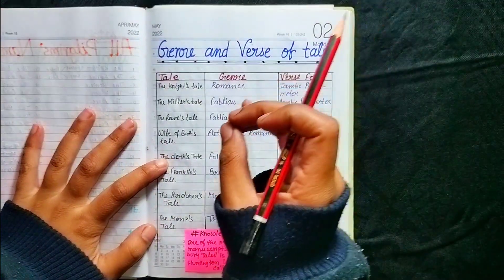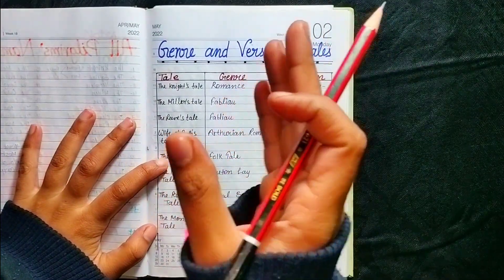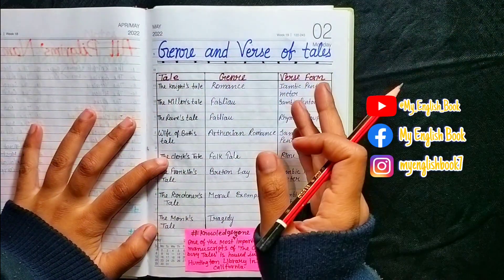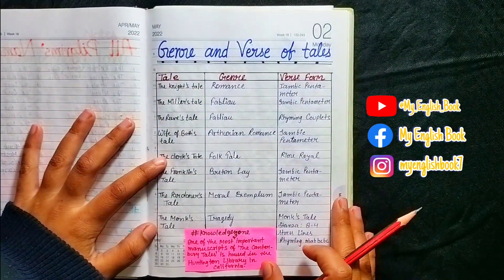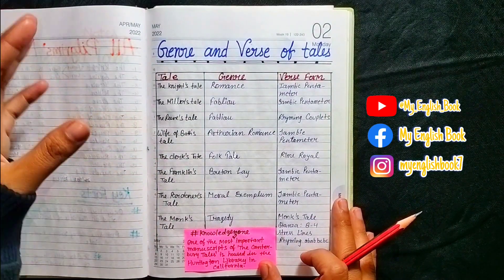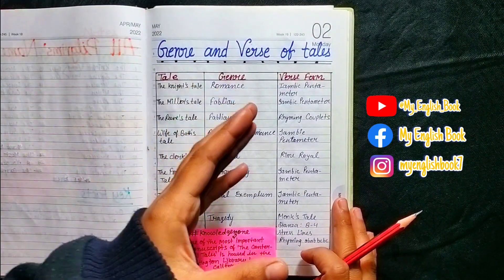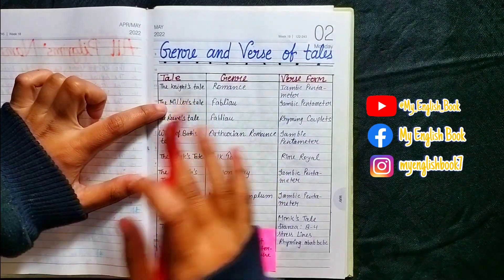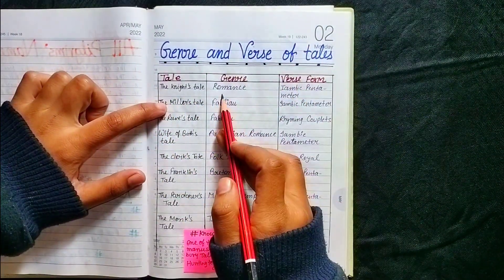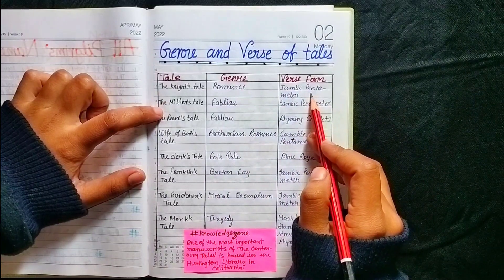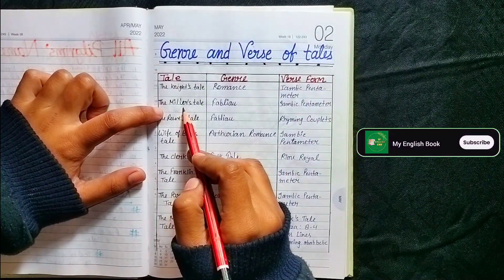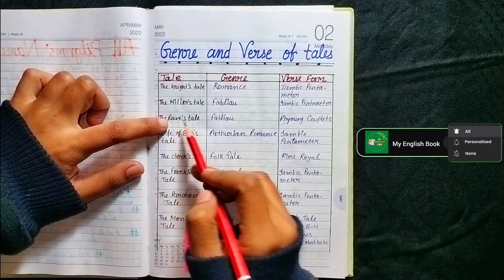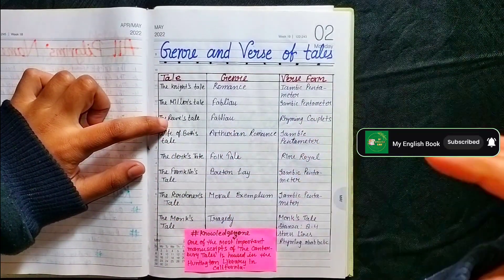Let's talk about these pilgrims' stories, their genre, which style they have been written in, and their word count. The Knight's tale is the genre of romance and is written in iambic pentameter. The Reeve's tale is also a fabliau written in rhyming couplets.